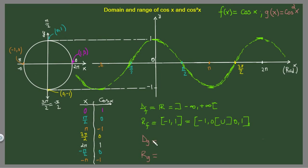Now we're going to find the domain and range of cosine squared of x. The period of this function — starting from minus π/2 and going to three π/2 — is two π, which is the same period as we had before with the sine function.